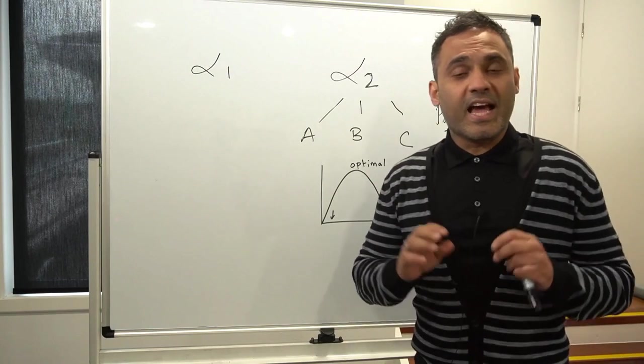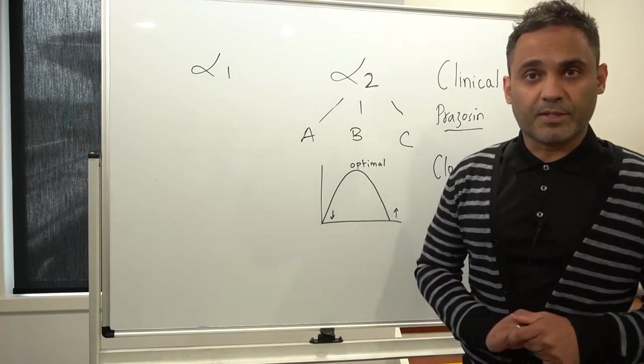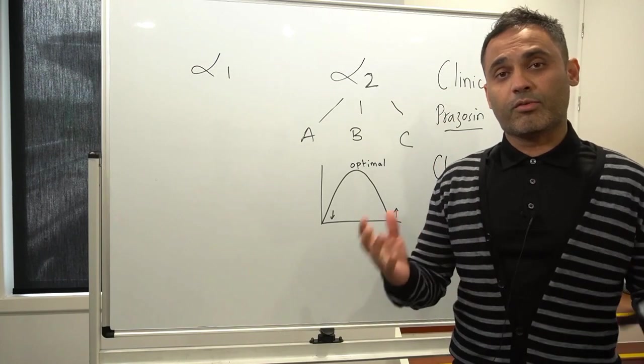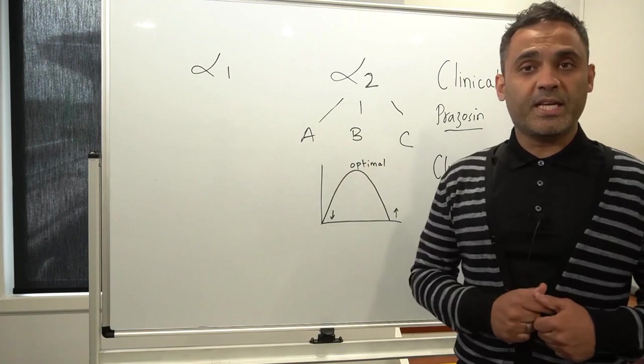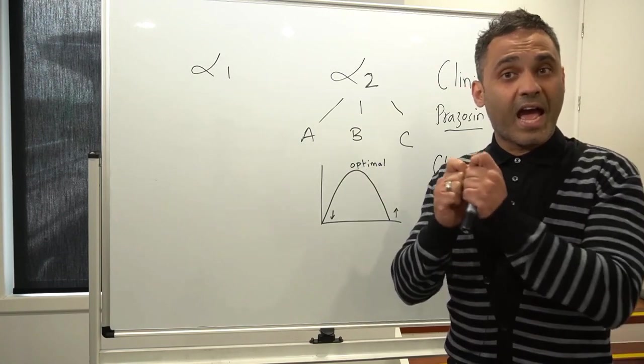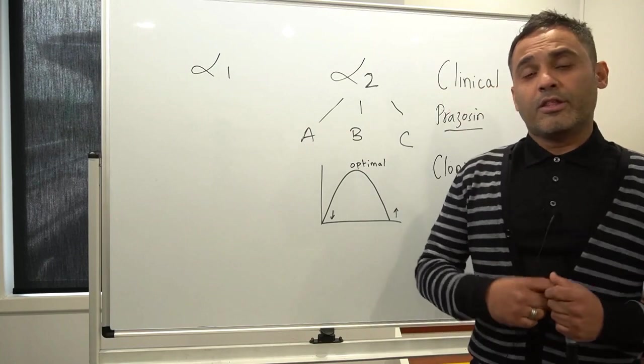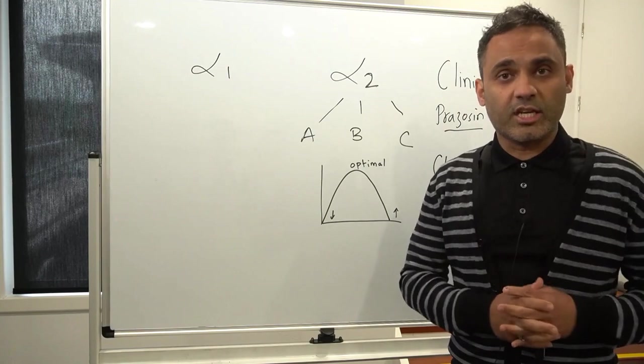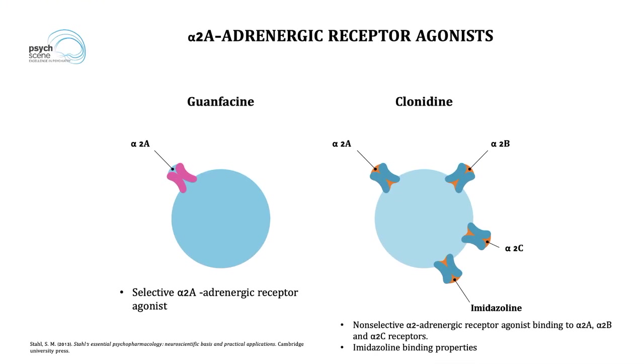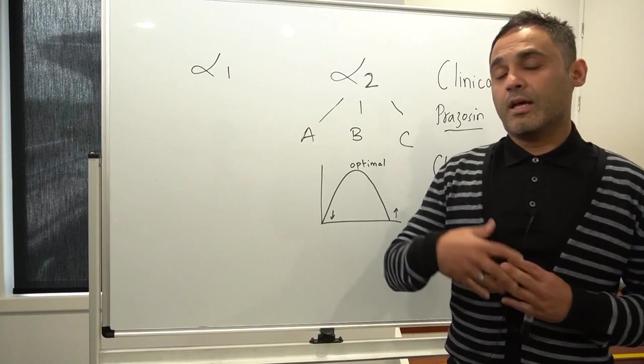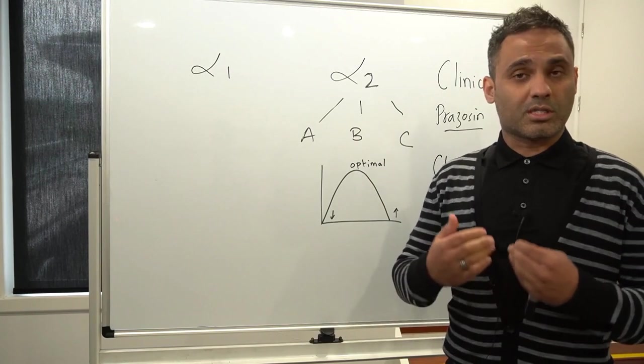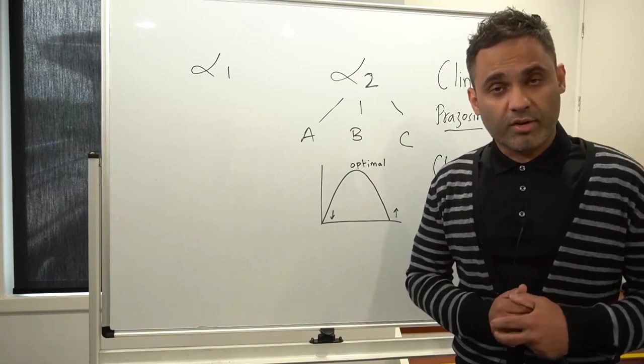The next receptor is the alpha-2 receptor. The alpha-2 receptor is both pre-synaptic and post-synaptic and there are three subtypes: A, B and C. We'll be talking about alpha-2 agonists. There are two key agents that are used in ADHD which are clonidine and guanfacine, but clonidine is also quite versatile and is used as an anti-anxiety agent, can be used quite effectively to promote sleep and treat nightmares in post-traumatic stress disorder. It also has analgesic properties.